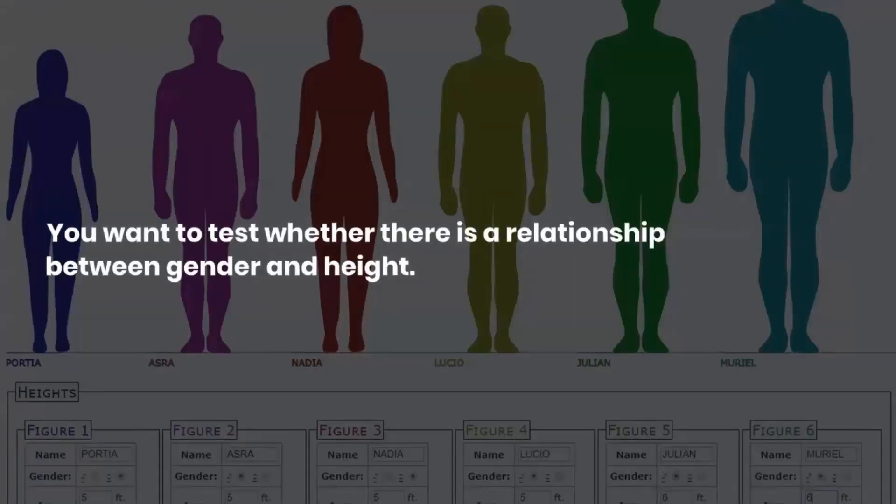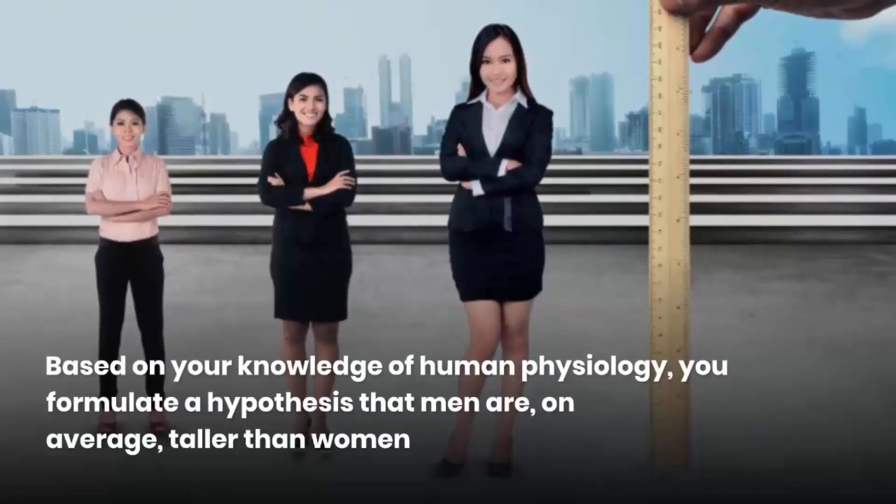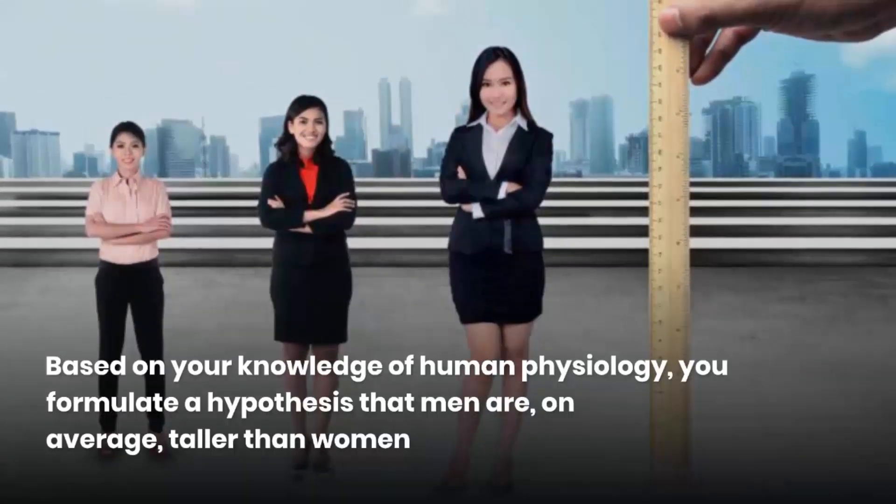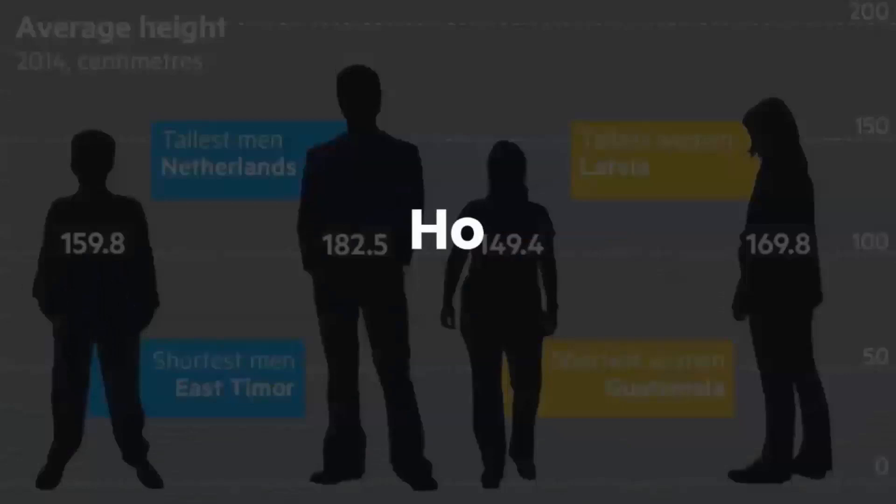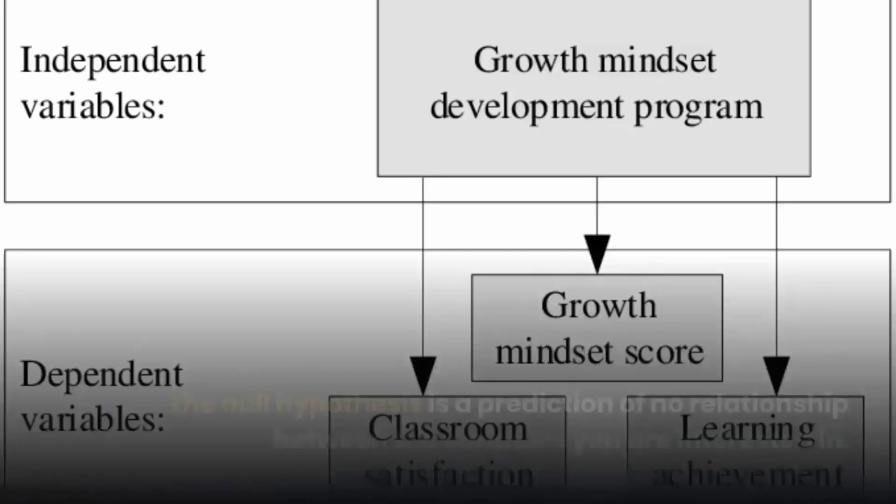You want to test whether there is a relationship between gender and height. Based on your knowledge of human physiology, you formulate a hypothesis that men are, on average, taller than women. To test this hypothesis, you restate it as: H0: men are, on average, not taller than women. Ha: men are, on average, taller than women.